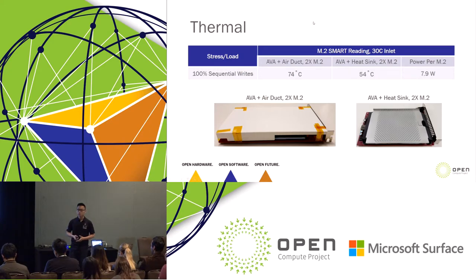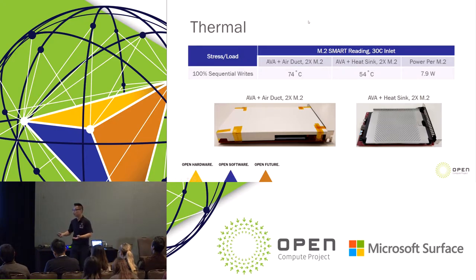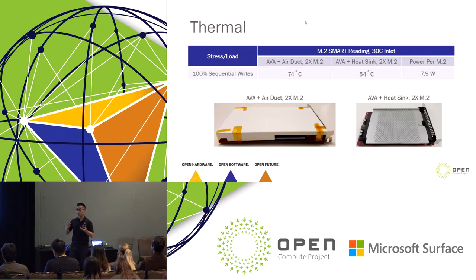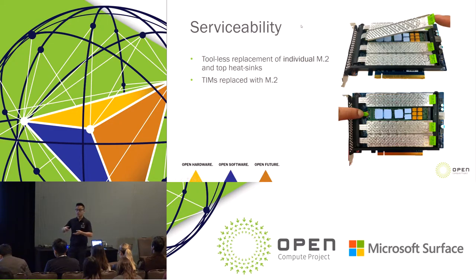This was what we were going with for a long time, but one of the issues we encountered — one of the lessons learned — is if you think about a service flow: let's say you want to replace a specific M.2. You pull the card out and replace that M.2, but the problem is thermal pad pre-compression. The other M.2s have been installed for a long time and their gap pads have been pre-compressed. When you install a new one, we found that performance degrades. That wasn't acceptable because we wanted it to be serviceable. So that's how we came up with a four heat sink design — one heat sink per M.2 — which gives us the ability to replace or add individual M.2s.